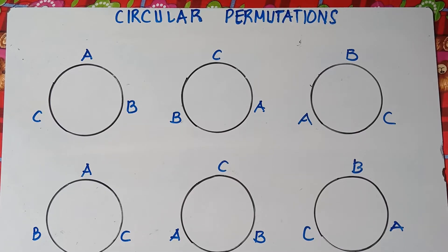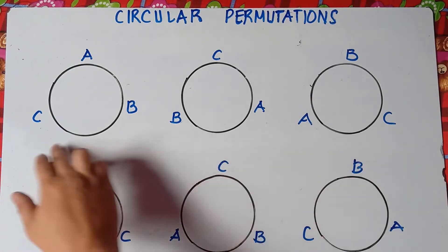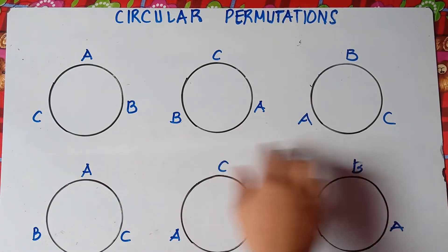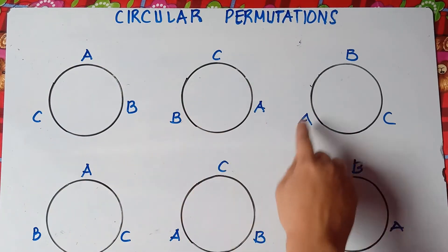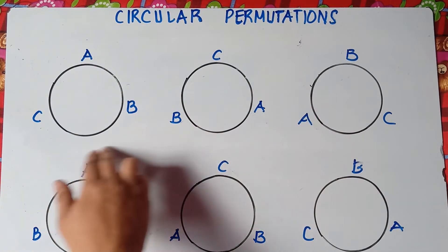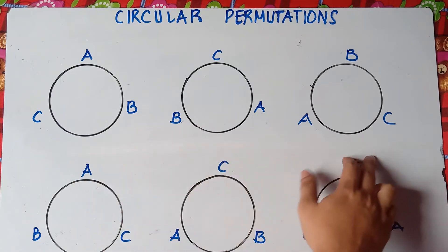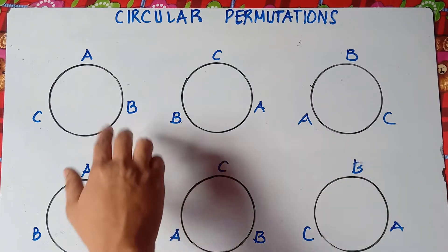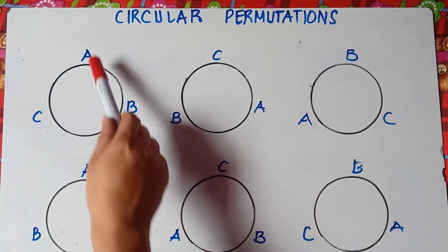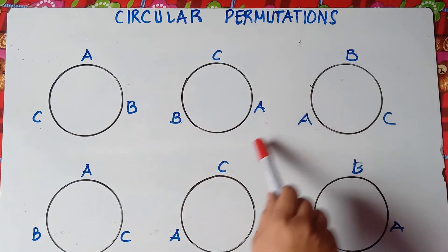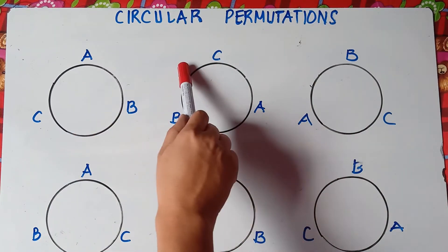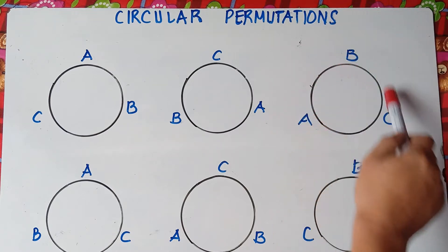Now we do have six circles here. So let's try to analyze the first three circles. We have ABC, another circle, ABC and ABC. In these first three circles, I rotate the position clockwise. So we have ABC and ABC.